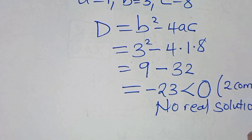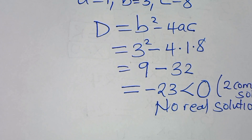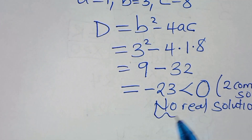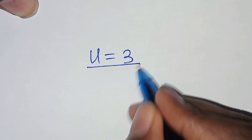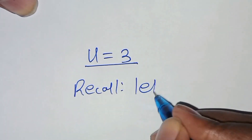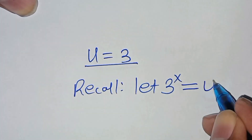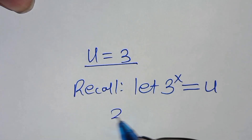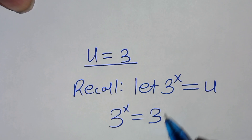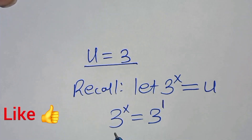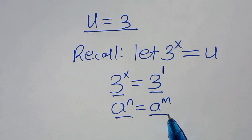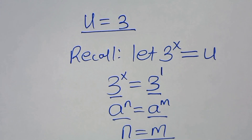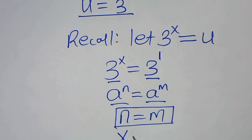We have 2 complex solutions from the quadratic part. So the only valid solution is u equal to 3. Recall that we let 3 to the power x be equal to u. Substituting this, we have 3 to the power x equals u, which equals 3. Remember 3 is 3 to the power 1. Since the bases are common, that is a to the power n equals a to the power m implies n equals m. Therefore the value of x is equal to 1.